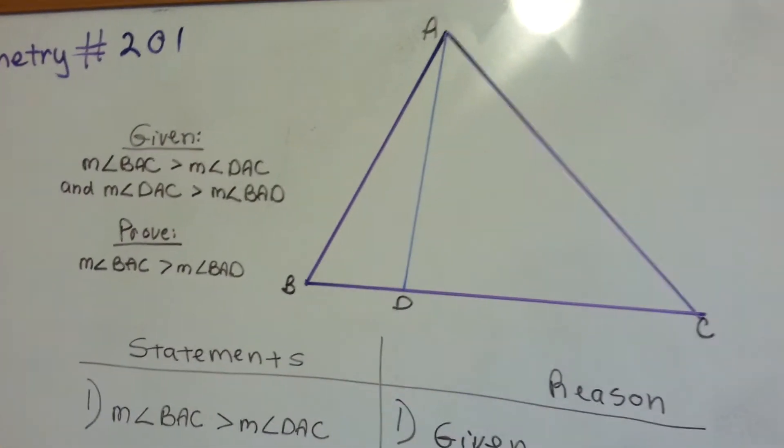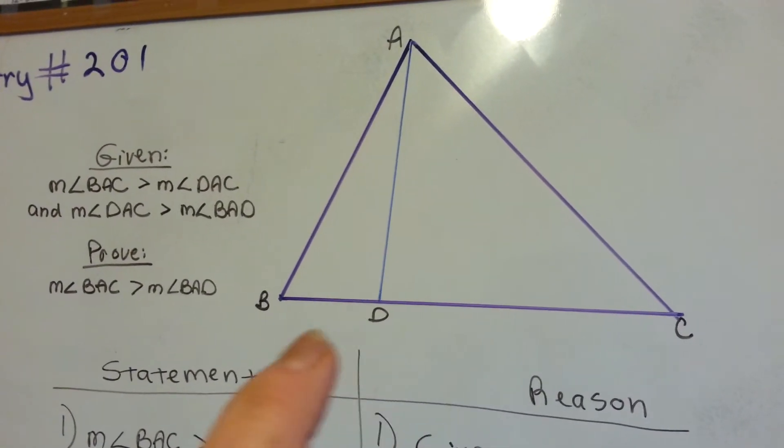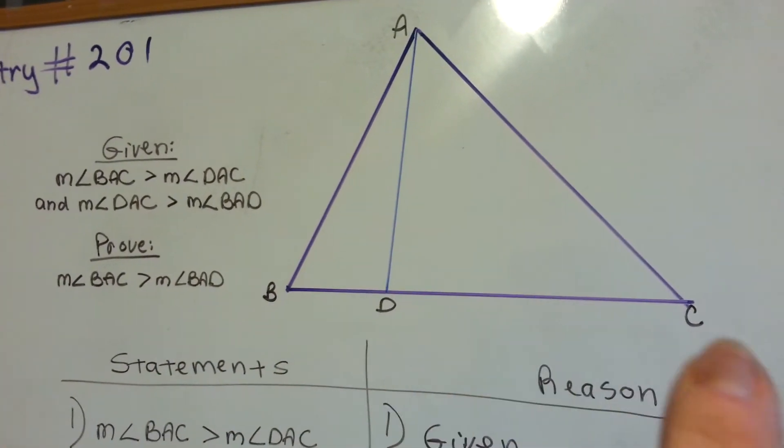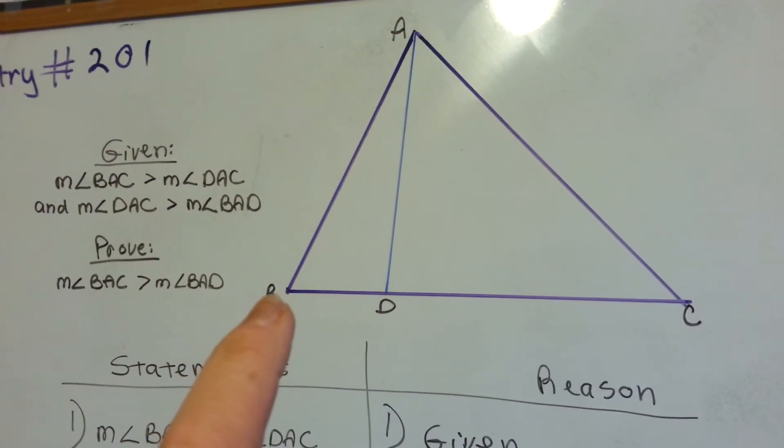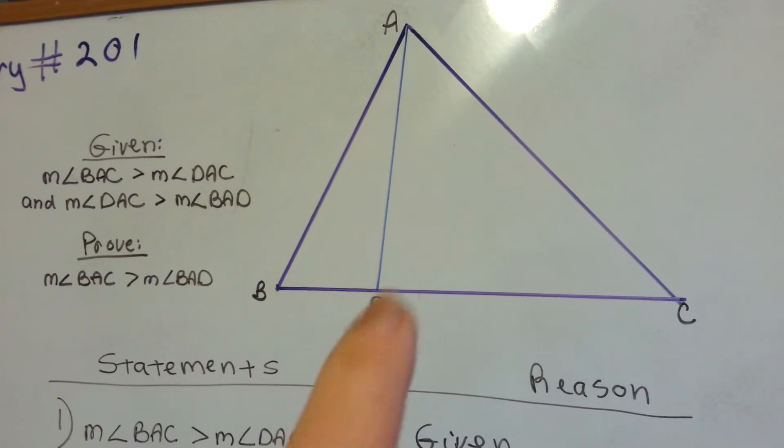So here's our given: the measure of angle BAC, the big guy here, is greater than the measure of angle DAC, this one.